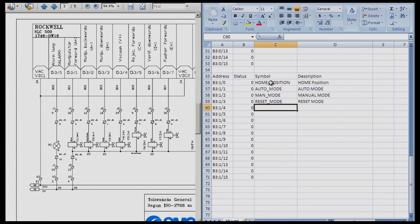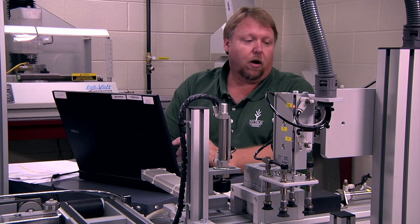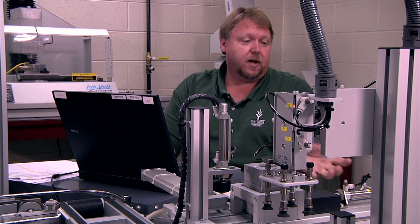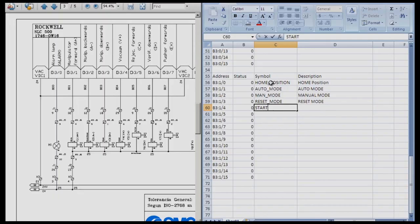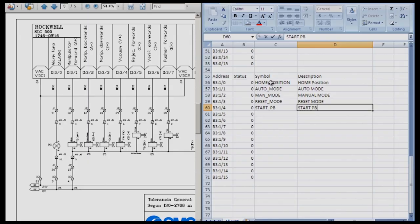So I've got home position, auto mode, manual mode, reset mode. Well, if you've got all those, you need one way to start the station. So we have a start button on the actual station, but I'm going to program it to a bit. So I'm going to say start underscore PB, which is my symbol. And then again, in my description, I could call it start push button. I'm just going to stick with start PB. And I'm also going to need a one-shot condition in my program. We'll talk about one-shot later as we continue programming. For this one, we're just going to call this start PB and we're going to call this an OS for one-shot.